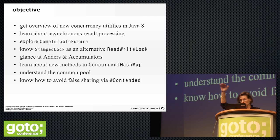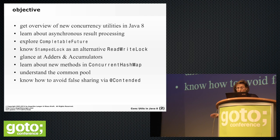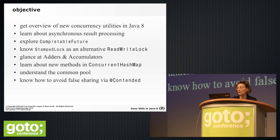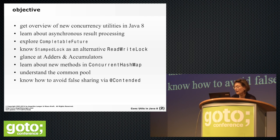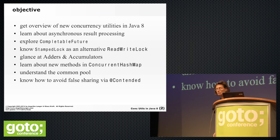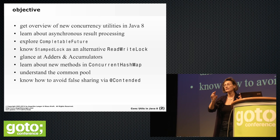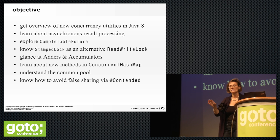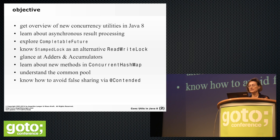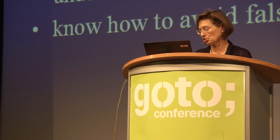I will talk about how this common pool differs from regular fork-join pools. At a very low level, they have also added a @Contended annotation, which is in sun.misc, and it is supposed to support avoiding false sharing.